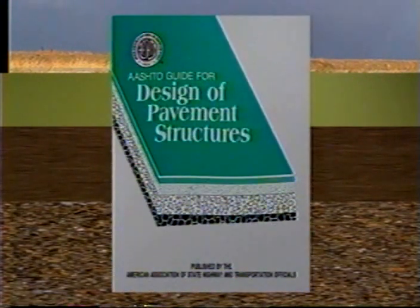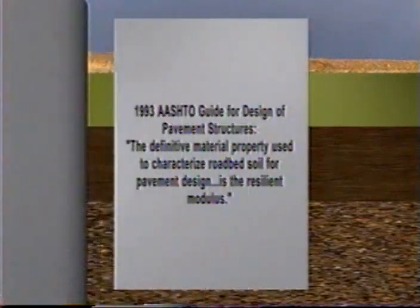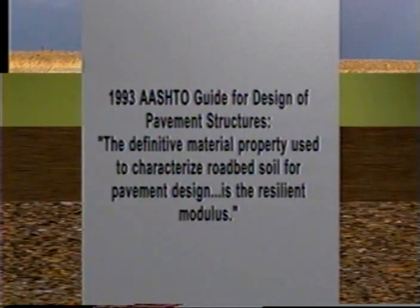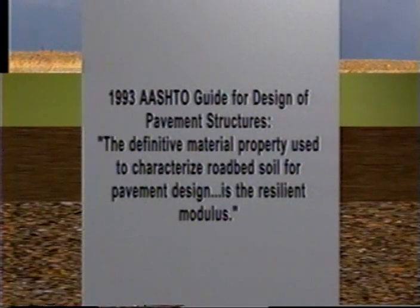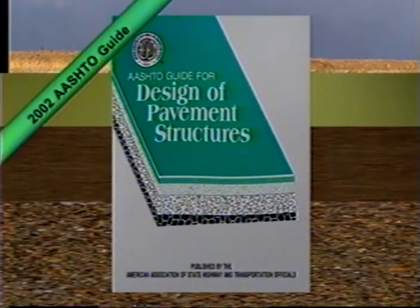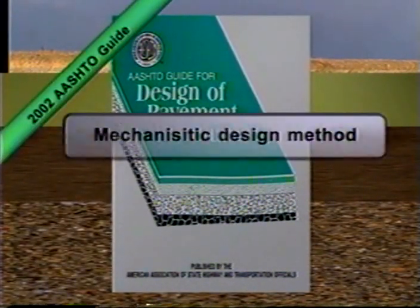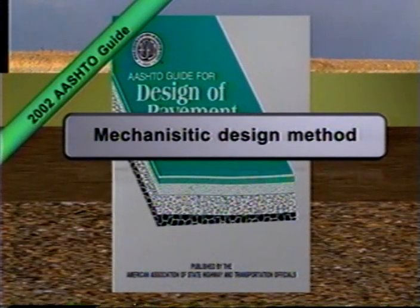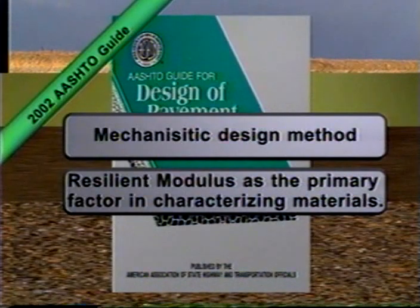For example, the 1993 AASHTO Guide for Design of Pavement Structures says the definitive material property used to characterize roadbed soil for pavement design in this guide is the resilient modulus. Work is currently underway on the 2002 version of the guide. It will encompass a mechanistic design method and in all likelihood will continue to rely on resilient modulus as the primary factor in characterizing materials.